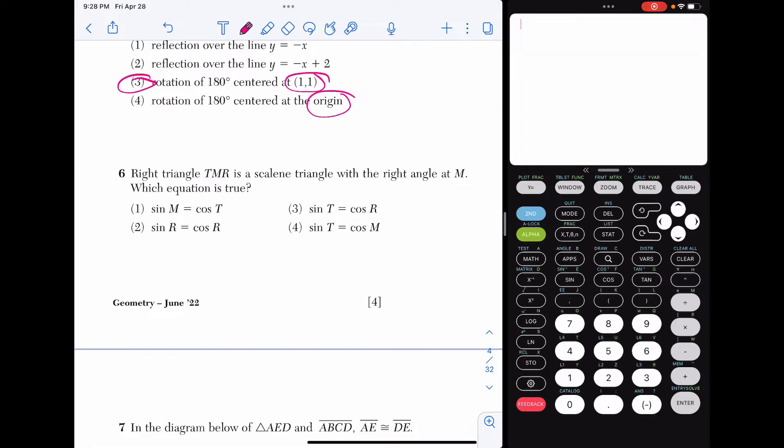Six, right triangle TMR is a scalene triangle with the right angle at M, which equation is true. For this, we want to know that the sine of an angle is equal to the cosine of its complementary angle. So we want to use the two complementary angles in this problem, which are going to be T and R. And we know that because M is the right angle. So the sine of one of them is equal to the cosine of the other, and that's choice three.